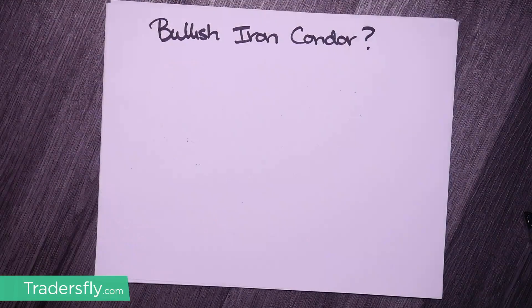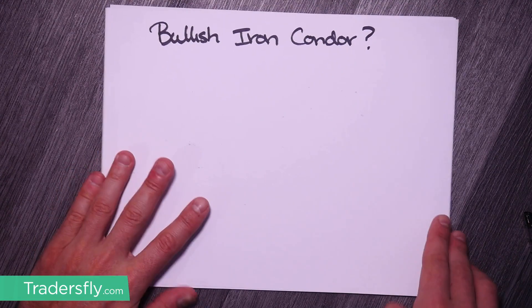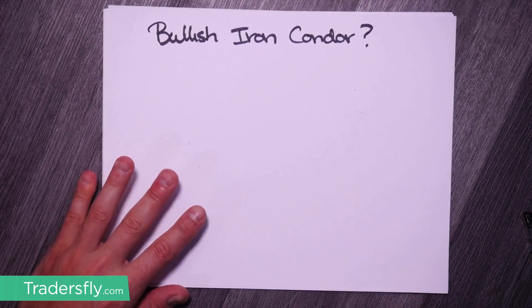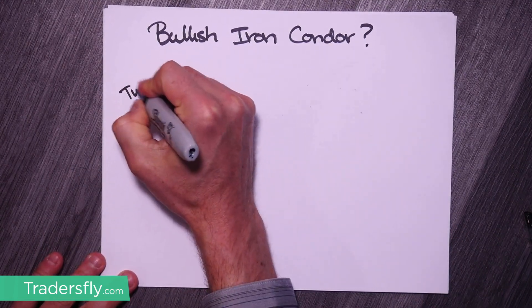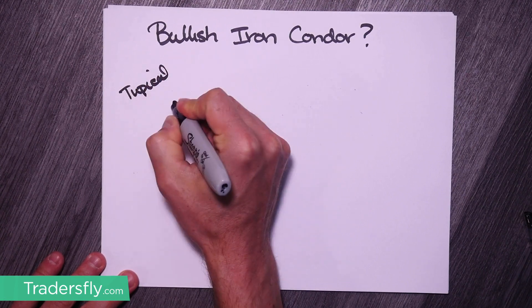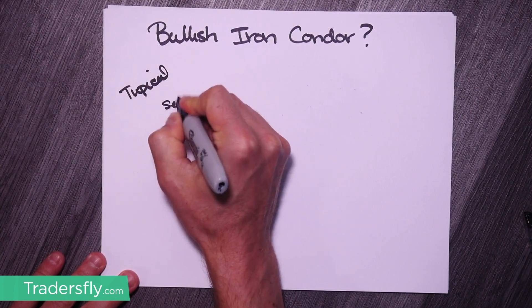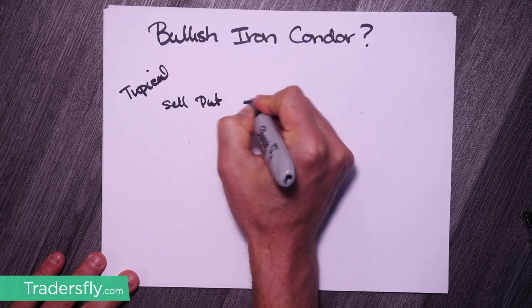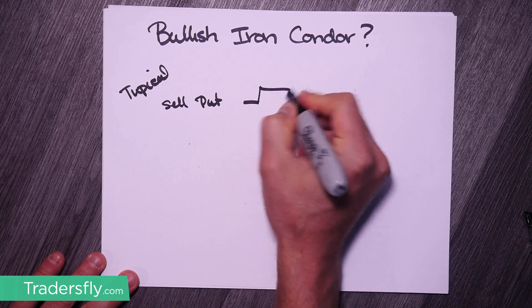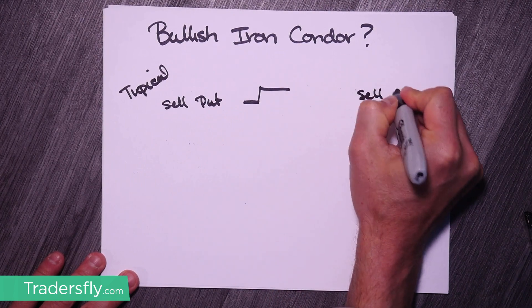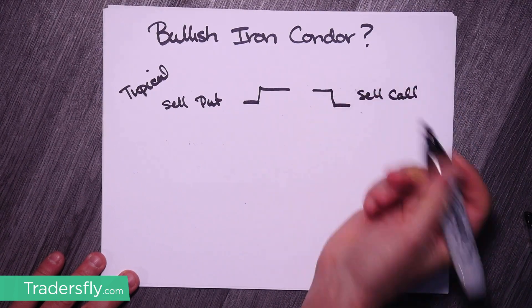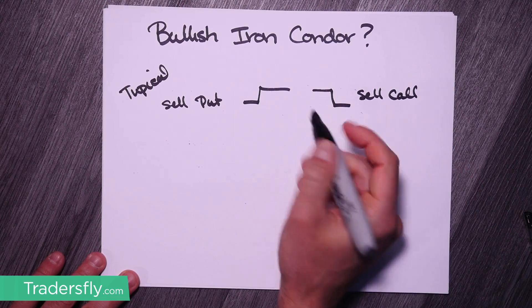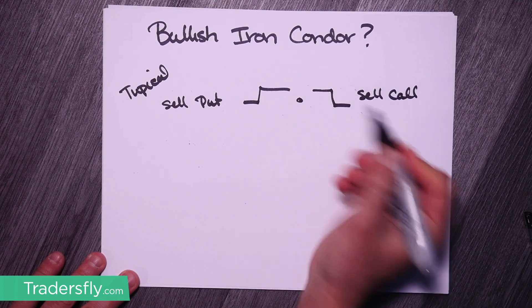First I'm going to show you on paper and then we're going to go to the screen. So how do I make a bullish iron condor? An iron condor the typical way is non-directional. What you do is you sell the put side, sell the vertical, and then you sell the call side. You sell the vertical there and now you've got an iron condor with your price in the middle.